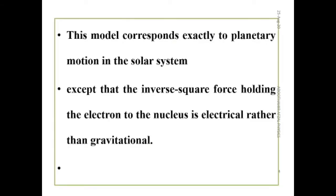The classical system we consider is the example of planetary motion in the solar system. There are a lot of similarities between planetary motion and the hydrogen atom. One thing which is not similar is that the nature of the force in planetary motion is gravitational, whereas the force in the atom holding the electron towards the nucleus is electric.